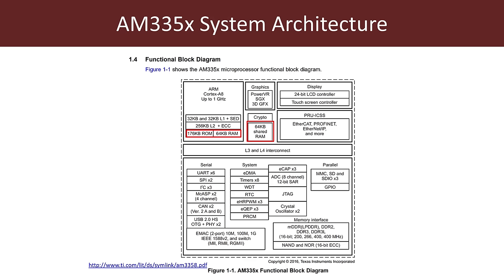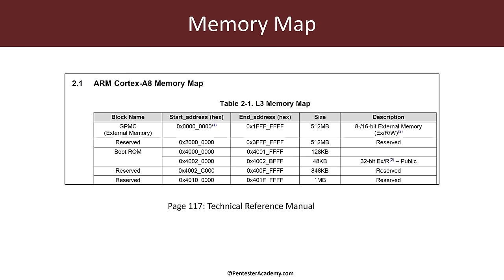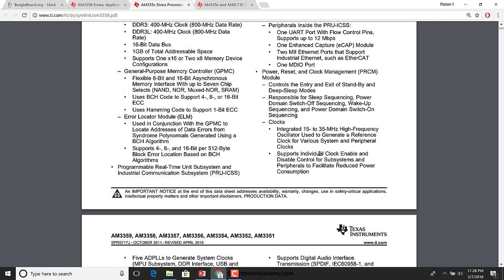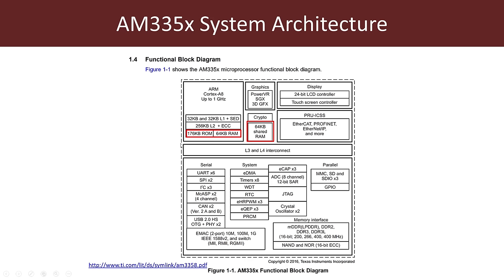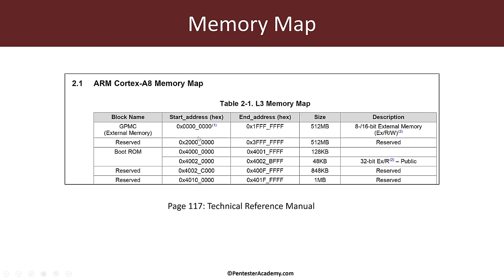The key takeaway is we have a very small ROM and a very small internal RAM. If we look at the Cortex-A8's memory map, the boot ROM is really the one we were talking about. In the previous slide, 176 KB ROM — and if you look at the next slide, you see 128 plus 48, which is 176. So this entire section is actually the boot ROM — and that is the place where execution begins after the processor resets.